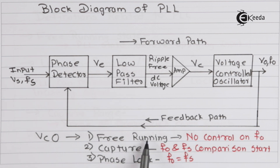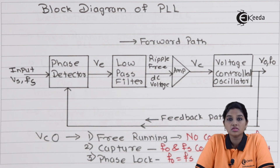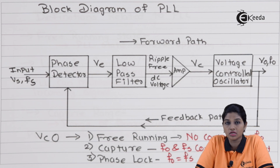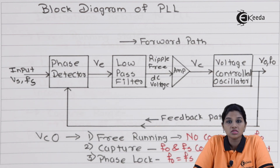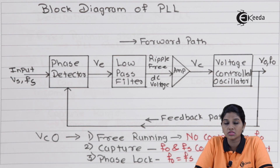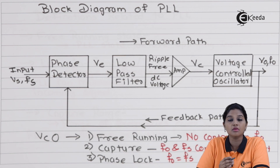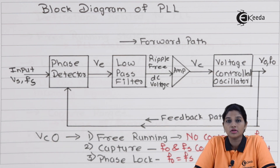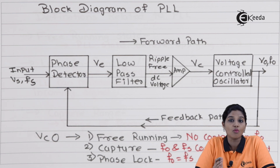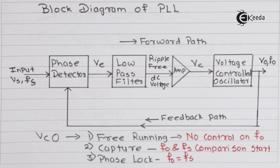The first stage is the free running state. In this stage there is no control on FO — it is the state of the VCO before applying the control voltage VC. The second stage is the capture state. In this stage, comparison between output frequency FO and input frequency FS begins, and the control voltage starts bringing the output frequency nearer to the input frequency, since the VCO output frequency varies with respect to input voltage.